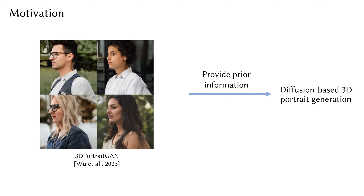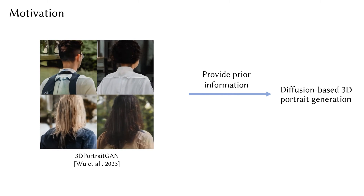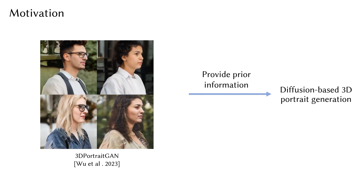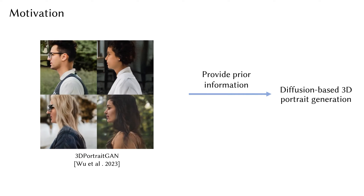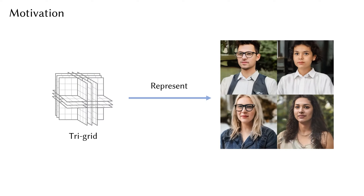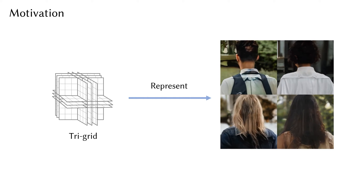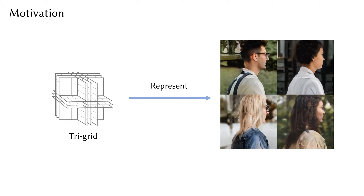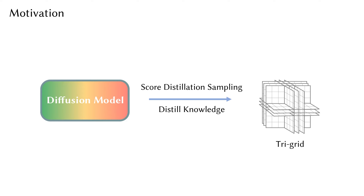3D Portrait GAN is a 3D-aware generator that can generate one-quarter headshot 3D full-head avatars and learn the joint distribution of portrait geometry and texture. In our framework, we propose to utilize 3D Portrait GAN as a prior for 3D portrait generation. 3D Portrait GAN employs a 3D representation named TriGrid, which stores the features of color and density of a 3D portrait. A straightforward approach would be to perform score distillation sampling directly on the TriGrid generated by the 3D Portrait GAN, which already stores the information of a coarse 3D portrait.